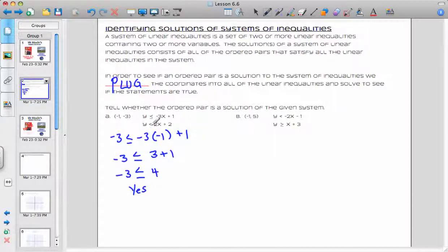We have to test it, though, with both equations. So I'm going to come down here, and I'm going to say negative 3 is less than 2 times negative 1 plus 2. 2 times negative 1 would be negative 2. Negative 2 plus 2 would give me 0, and negative 3 is still less than 0.